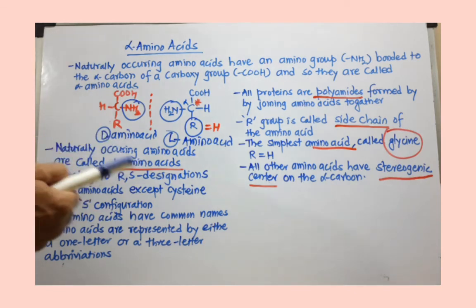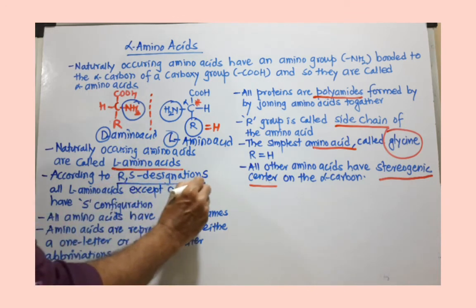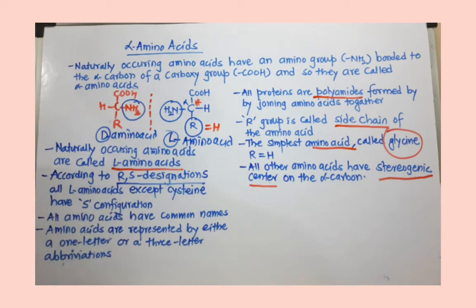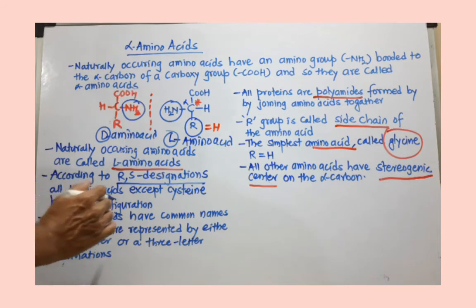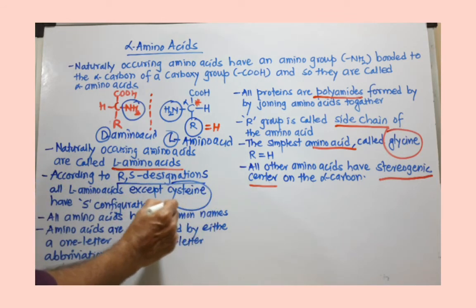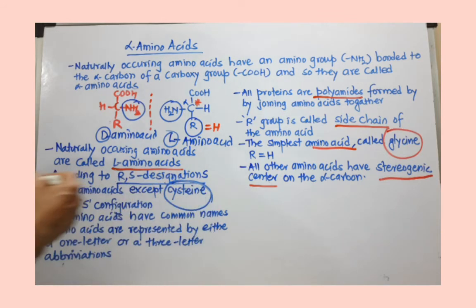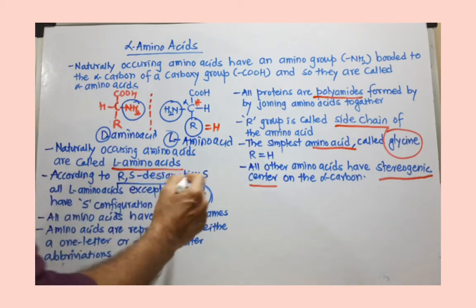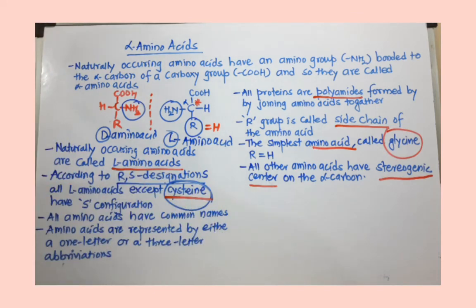There is another notation we use. If there is a stereogenic center, we can use R,S designation. All L-amino acids except cysteine - this is a very important point - except cysteine, all L-amino acids have S designation. They are S in configuration.